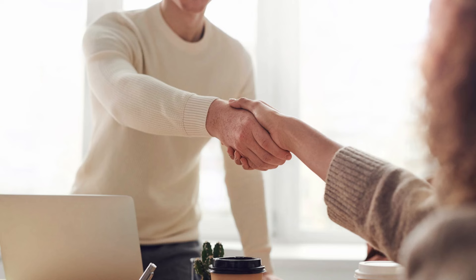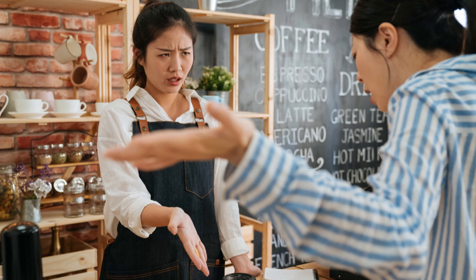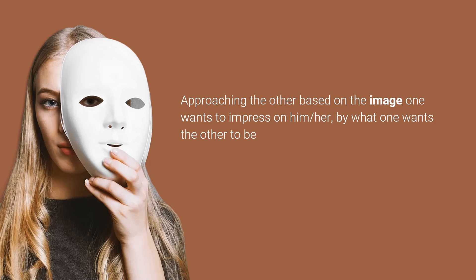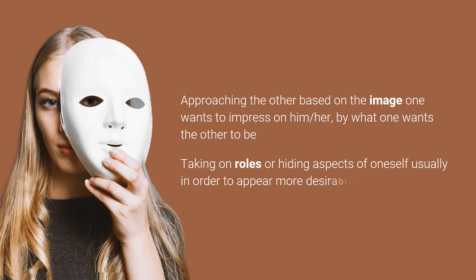For example, we may act nicely when we are with our boss, while rudely when we are with our clients. This pretentiousness is known as seeming. Seeming is a way of approaching the other based on the image one wants to impress on him or her, by what one wants the other to be. It involves taking on roles or hiding aspects of oneself, usually in order to appear more desirable to the other. Despite this tendency to pretend, we still strive for a deeper and more genuine interaction with others. This more authentic interaction is called dialogue.